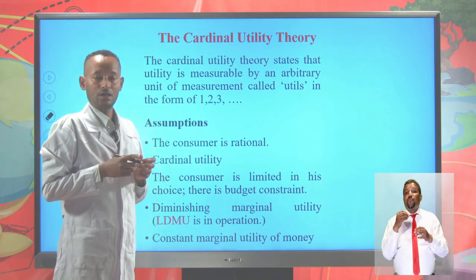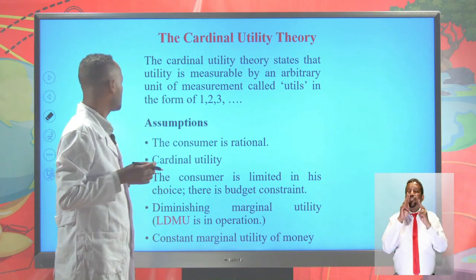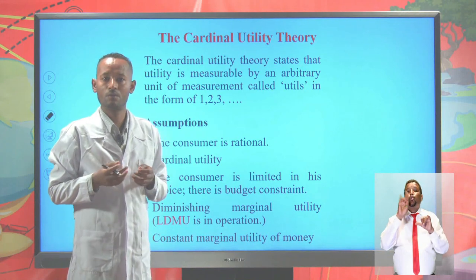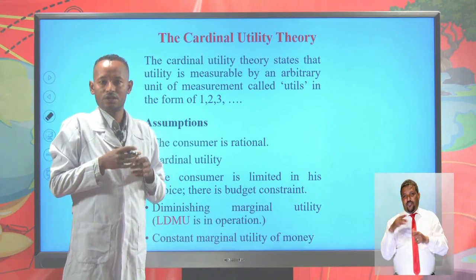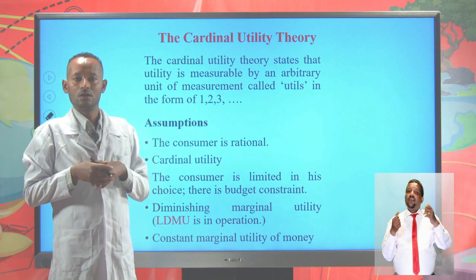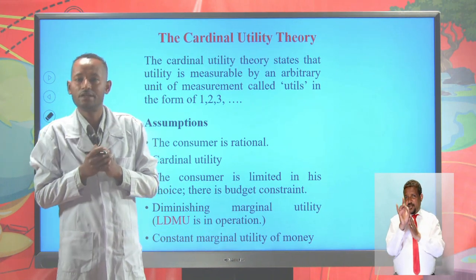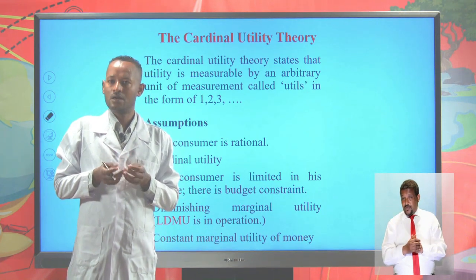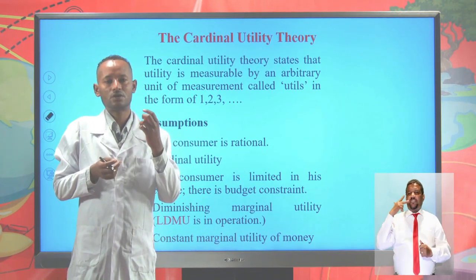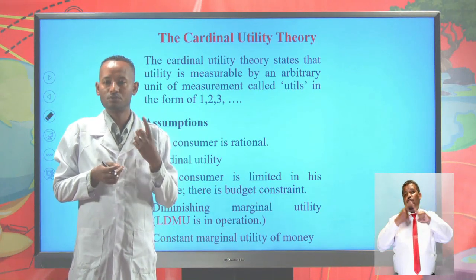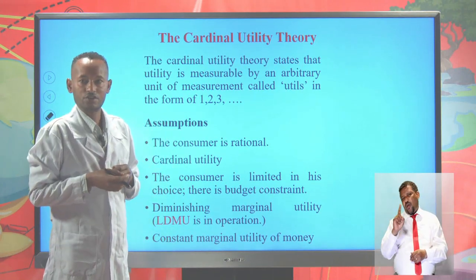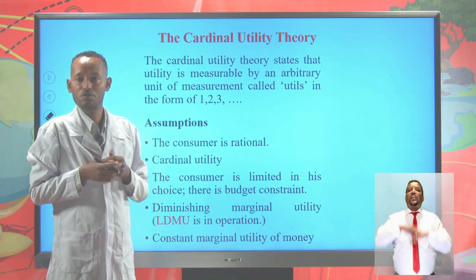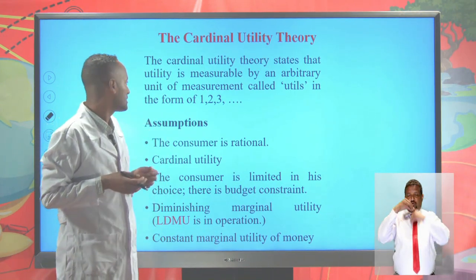The cardinal utility theory states that utility is measurable by an arbitrary unit of measurement called utils — in the form of one, two, three. So it is possible to attach numbers to the satisfaction we derive from consumption of goods and services. For example, I get three utils of satisfaction from consumption of one orange, or I get six utils of satisfaction from consumption of three bananas.